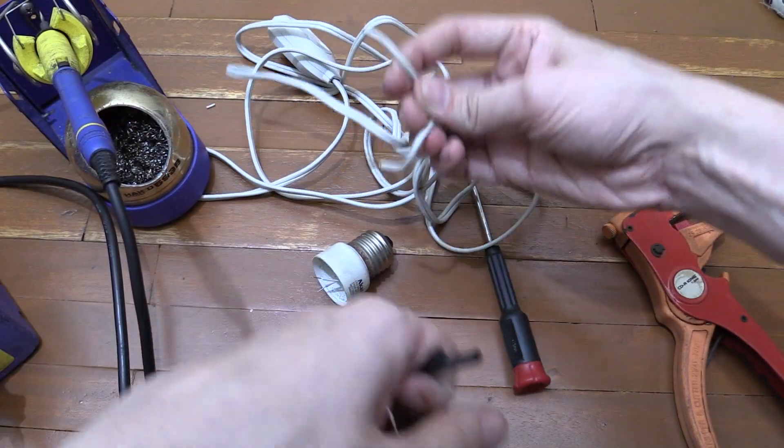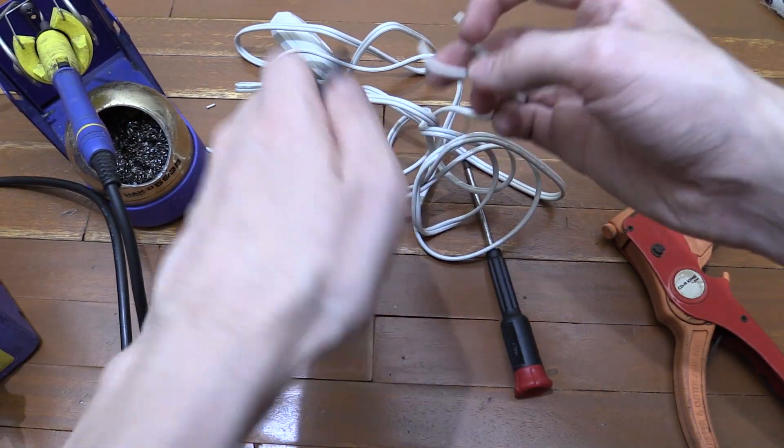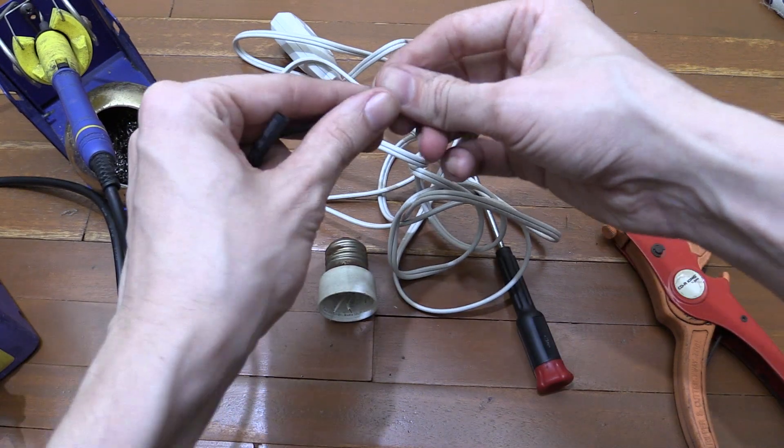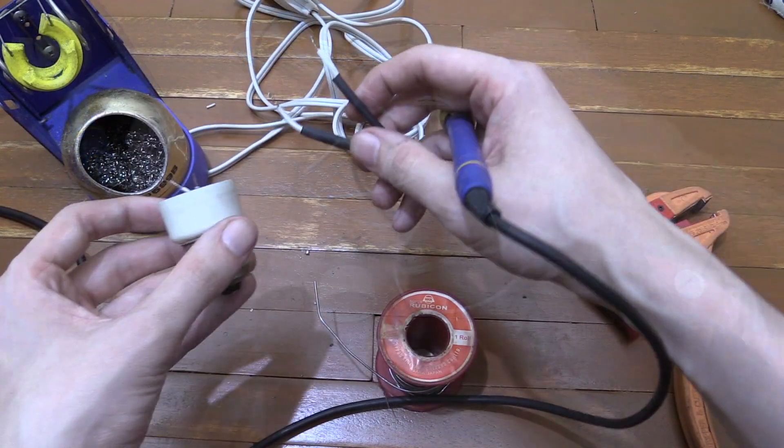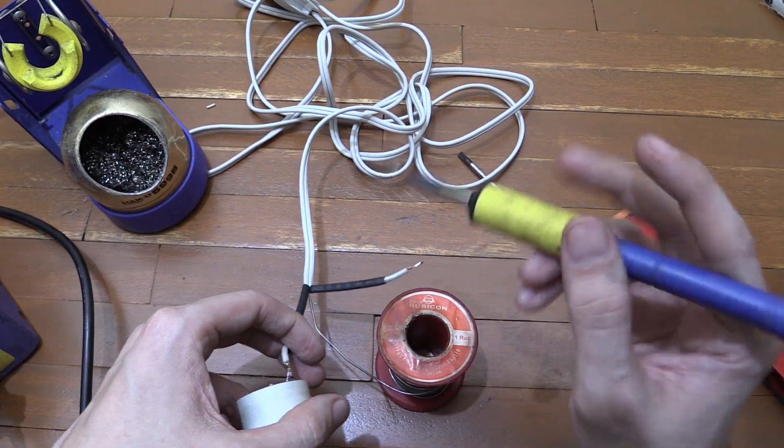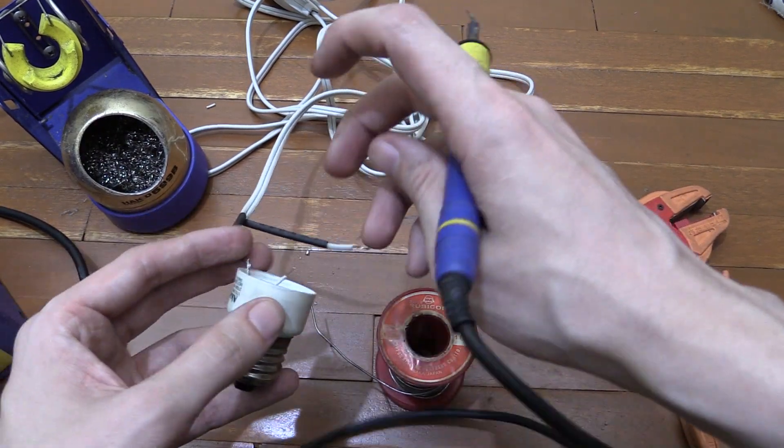And the idea now is to solder these two wires to these two wires. But first of all I'm going to put some heat shrink tubing onto my wire so that I can cover the connections later. Now I've pre-tinned my wires just to make it a little bit easier to join them together. So that's one wire joined.